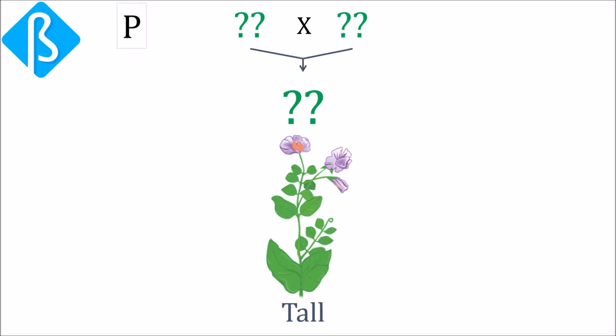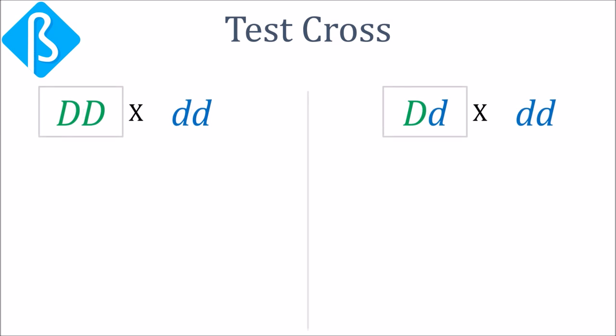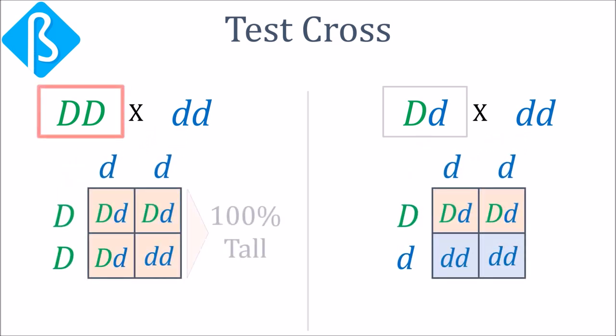The second application of the Mendelian principle gives an appreciable answer for it, where we perform test cross. In this example there are two possible genotypes of the available strain. It could be true breeding homozygous or heterozygous with one dominant and one recessive allele. So we will cross them with phenotypically recessive homozygous strains, that is dwarf plant.